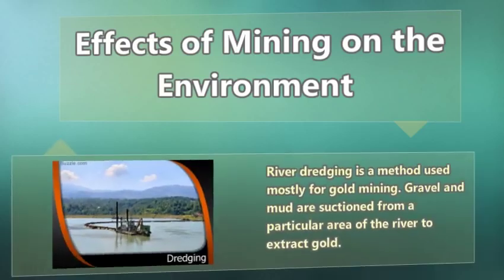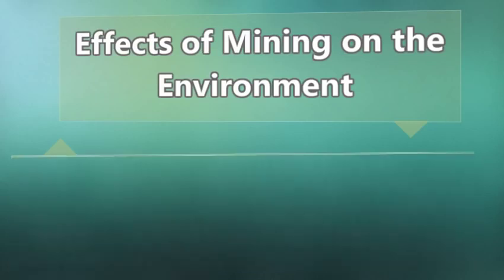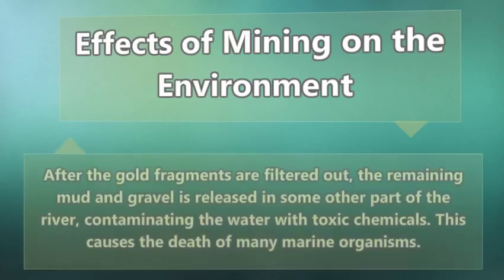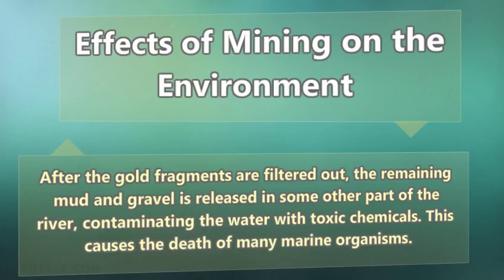River dredging is a method used mostly for gold mining. Gravel and mud are suctioned from a particular area of the river to extract gold. After the gold fragments are filtered out, the remaining mud and gravel is released in some other part of the river, contaminating the water with toxic chemicals. This causes the death of many marine organisms.